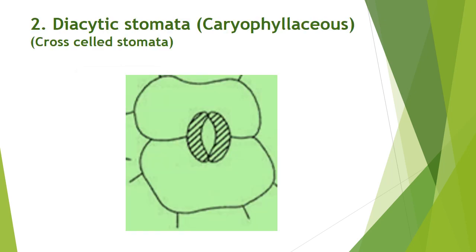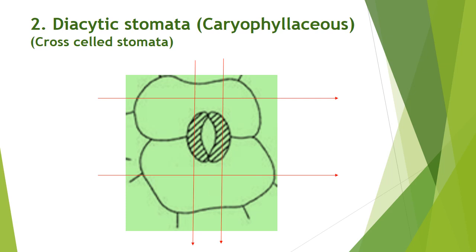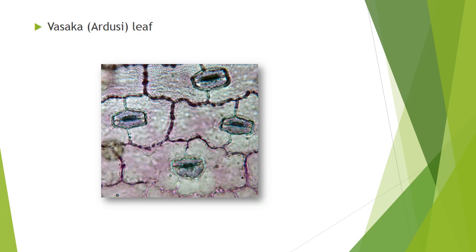The next type is diacytic stomata, also known as caryophyllaceous stomata or cross-celled stomata. Here, subsidiary cells are again two in number, but arranged so that if you draw the axis of the guard cells and the axis of the subsidiary cells, they make exactly a 90-degree angle — the guard cells are perpendicular to the subsidiary cells. In the actual image of the Vasaka or Adhatoda leaf surface, you can easily see the guard cells at right angles to the subsidiary cells.